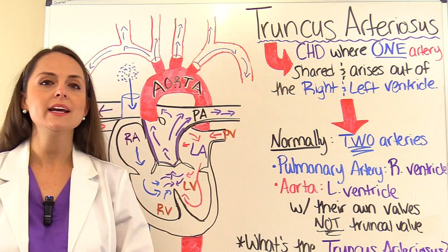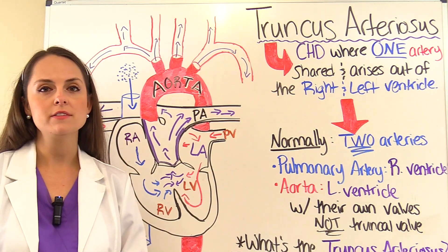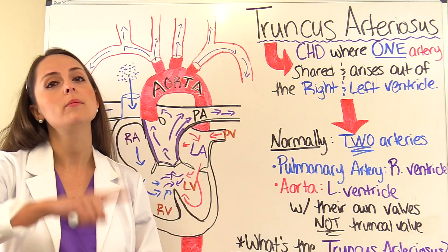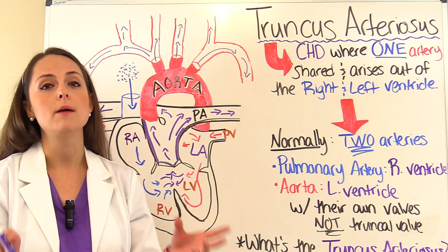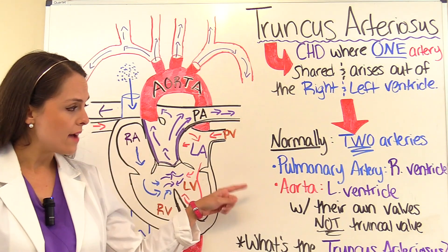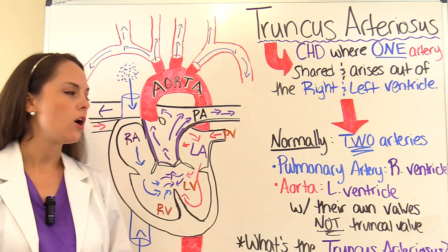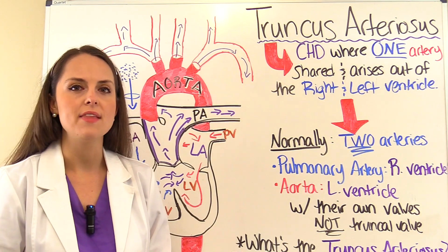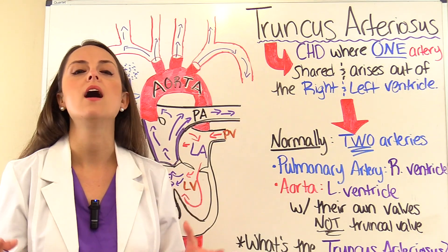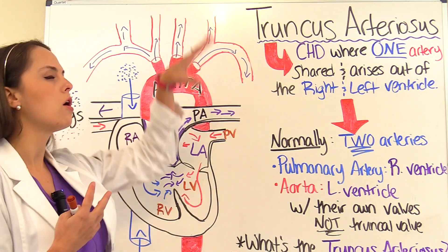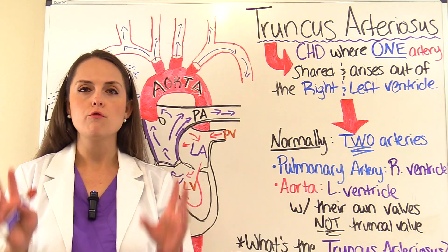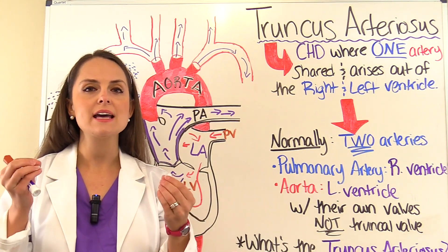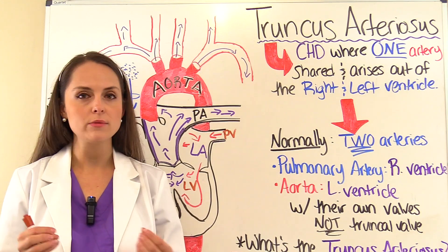The first artery is the pulmonary artery, which comes out of the right ventricle. The right ventricle takes deoxygenated blood that just went through the body and sends it through the pulmonary artery to the lungs to become oxygenated. The other artery is the aorta, which comes off the left ventricle and carries oxygenated blood out to the body, because tissues, organs, and the brain must receive fresh oxygenated blood.